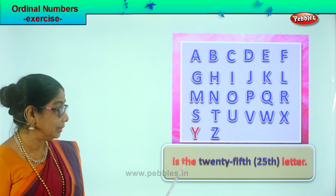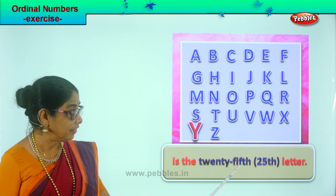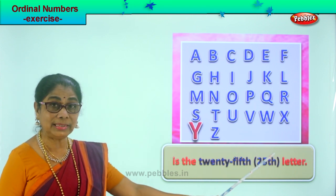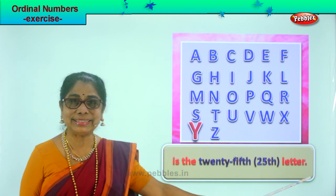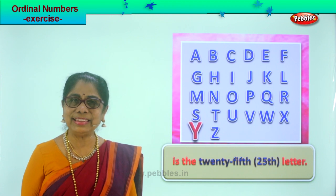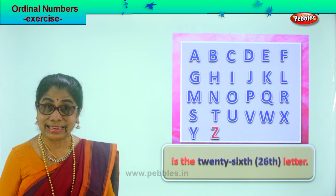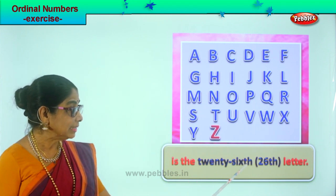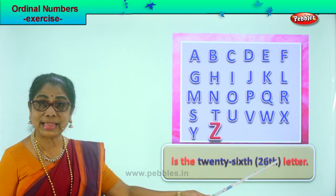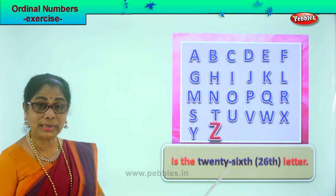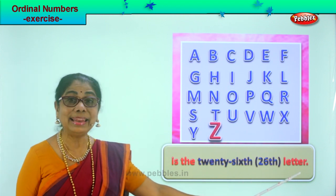Y is the twenty-fifth letter. You write twenty-five and TH for twenty-fifth. And finally, the last letter of the alphabet — Z. Z is the twenty-sixth letter. You write twenty-six and TH. That's how we represent twenty-sixth. Z is the twenty-sixth letter.